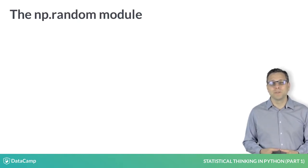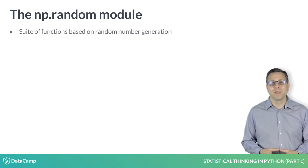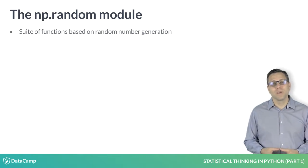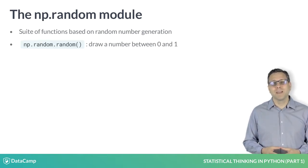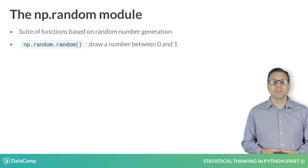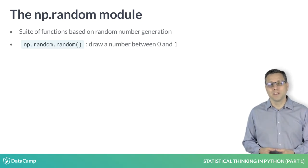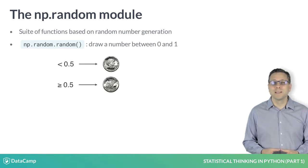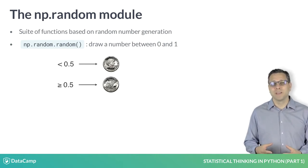NumPy's random module, a suite of functions based on pseudorandom number generation, will be your main engine for doing this. To simulate a coin flip, we use the function np.random.random, which draws a number between zero and one, such that all numbers in this interval are equally likely to occur. If the number we draw is less than 0.5, which has a 50% chance of happening, we say we got heads, and we get tails otherwise.